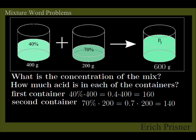The second container contains 70% times 200 equals 0.7 times 200 equals 140g of pure acid. And of course 60 grams of water.